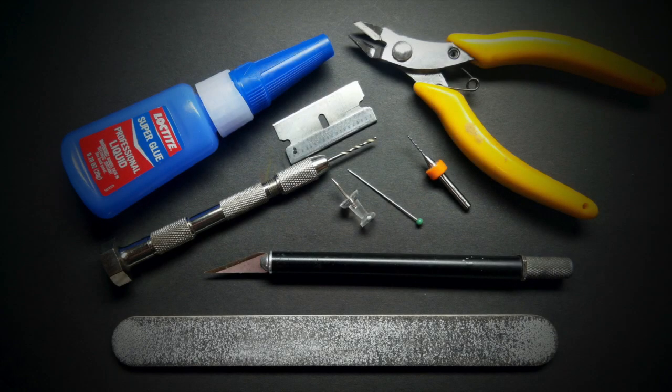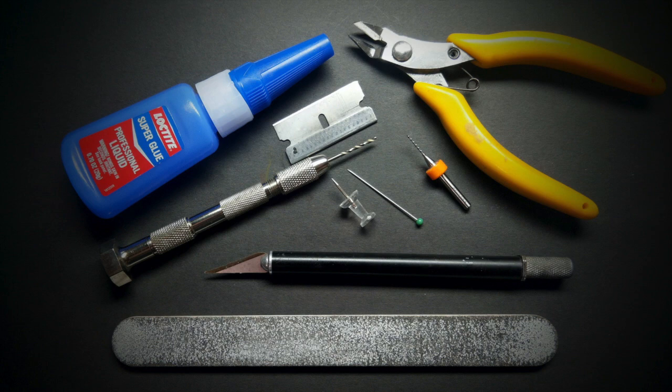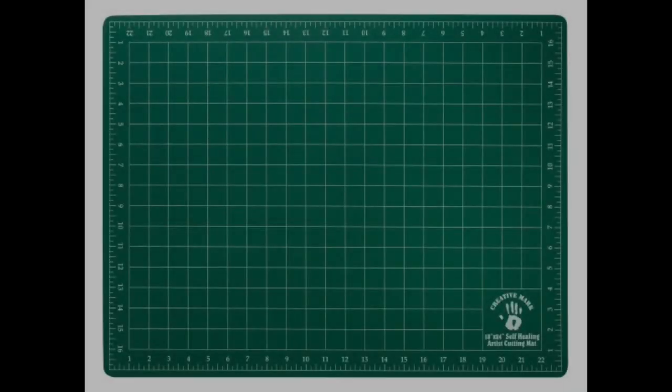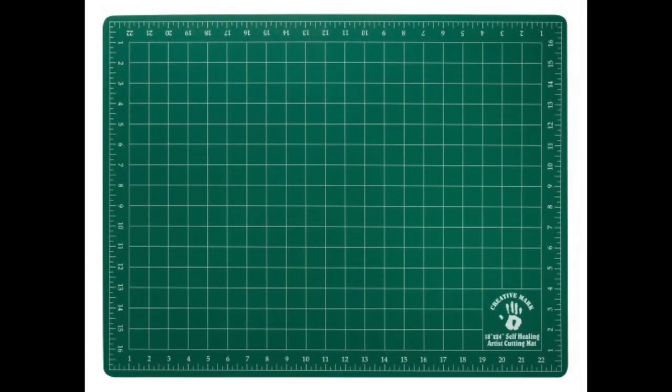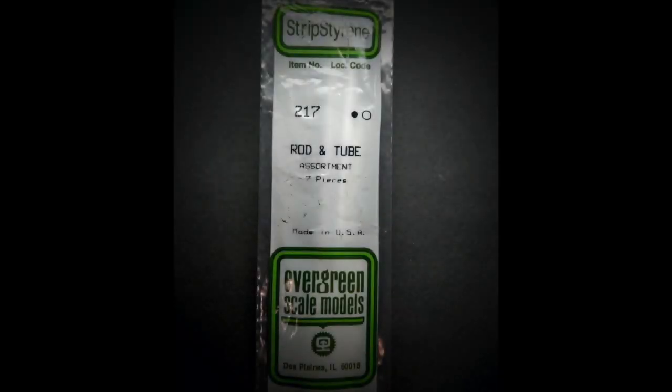Here's some helpful tools that I'll be using throughout this video: files, hobby knives, razor blades, pin vices, straight pins, flush cutters, and super glue. In addition to that, I also have a self-healing sewing mat that I like to cut on when I'm working on my desk because I don't want to damage the surface below. The styrene that I'll be using came from Evergreen Scale Models in an assortment, and the diameter that I'll be using is approximately two millimeters or one sixteenth of an inch.